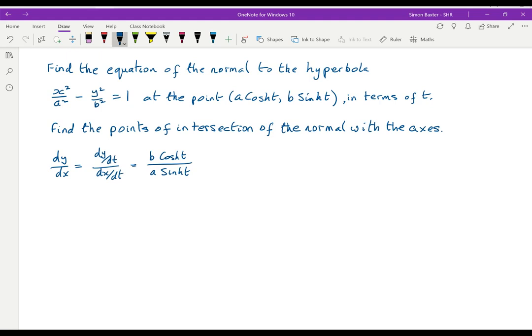We want the normal, so the gradient of the normal is minus 1 over that, which is -a sinh t divided by b cosh t.